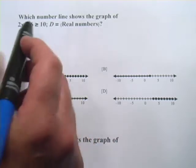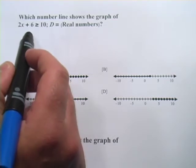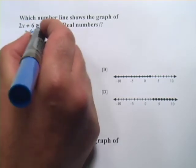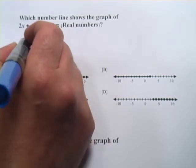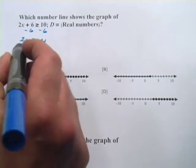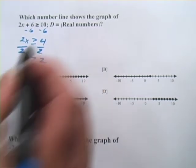So how do we do this? The first step is to solve this inequality for x, just like it was a regular equation. We're going to do that by subtracting 6 first, and we get 2x is greater than or equal to 4, and then dividing by 2 to get x alone, and we get x is greater than or equal to 2.